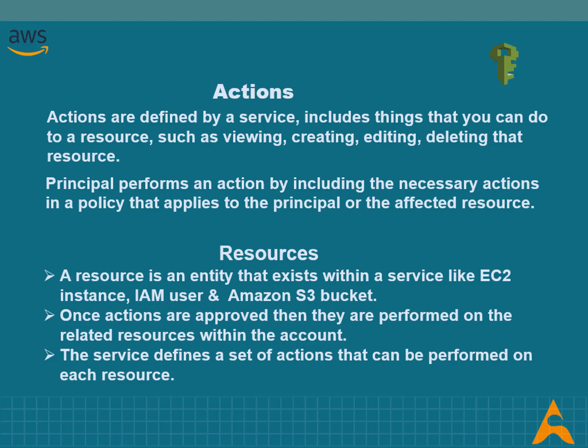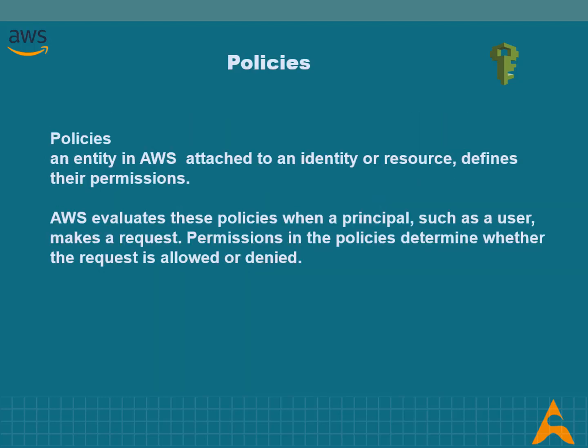A resource is an entity that exists within a service — examples include an Amazon EC2 instance, an IAM user, and an S3 bucket. When you provide permission using an identity-based policy in IAM, you provide permission to access resources only within the same account. If you need to make a request in a different account, the resource in that account must have an attached resource-based policy that allows access from your account, or the user must assume a role within that account with the required permissions.